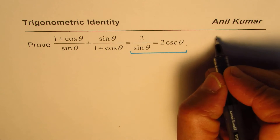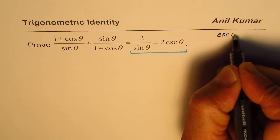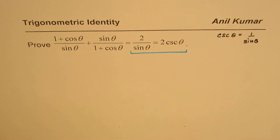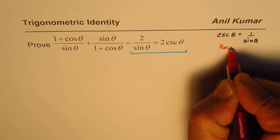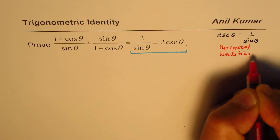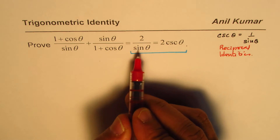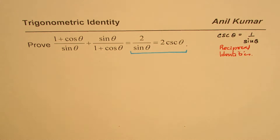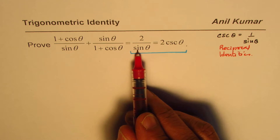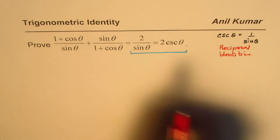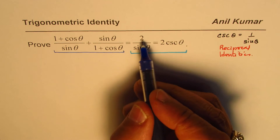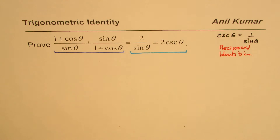We know that cscθ equals 1/sinθ — these are reciprocal identities. Therefore, 2/sinθ is equal to 2 cscθ. We could replace cscθ with 1/sinθ to get 2/sinθ. So basically, we'll prove that the left side equals 2/sinθ.